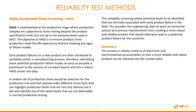Next, let's have a look at the Highly Accelerated Stress Screening, or HASS. HASS is implemented at the production stage where production samples are subjected to stress testing beyond the product specification limits, but not up to the extreme levels used in the HALT test. The objective of HASS is to ensure products from production meet the life expectancy without showing any signs of failure modes. Early production failures on a new product are often attributed to variability within the manufacturing process. Therefore, identifying these potential production failure modes as early as possible is paramount to the success of a product launch.